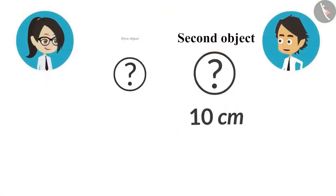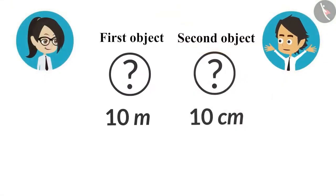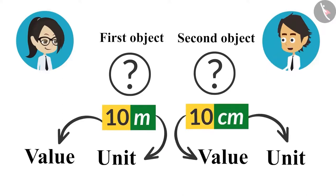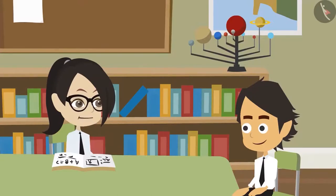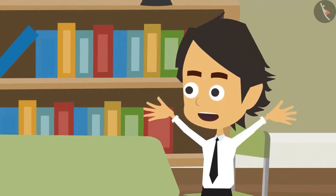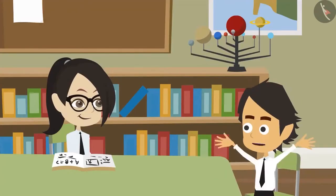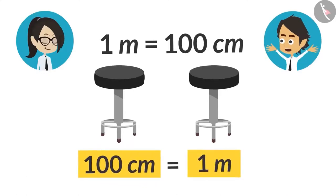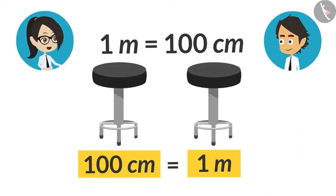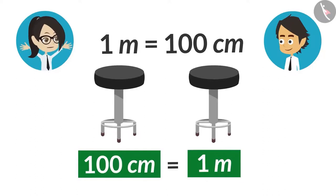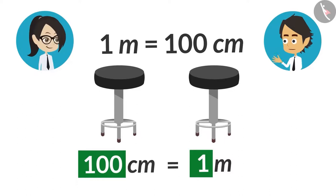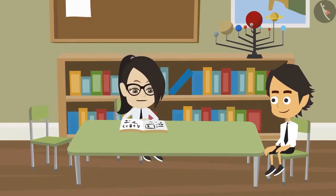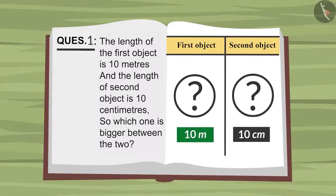For example, in this question, the length of the first object is given as 10 meters. This means that 10 is the value and meter is the unit. Both are important to find the length of any object. Centimeter and meter are two different units of measurement to measure length. One centimeter is smaller than one meter. One meter has 100 centimeters in it. Which means when an object will be 100 centimeters, then it will be equal to one meter. The length of one object is written with different units of measurement, therefore there is a difference in their value too. Despite the value being less, the length of this object can be equal to the other. I understand it now. 10 meters is bigger than 10 centimeters.